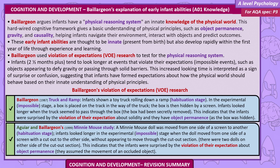Baillargeon's violation of expectation research. Baillargeon: truck and ramp study. Infants were shown a toy truck rolling down a ramp (habituation stage). In the experimental, impossible stage, a box was placed in the track in the way of the truck, then hidden by a screen. Infants looked longer when the truck seemed to pass through the box — the box had been secretly removed — indicating that the infants were surprised by the violation of their expectation about solidity, and suggesting they have object permanence even though the box was hidden.